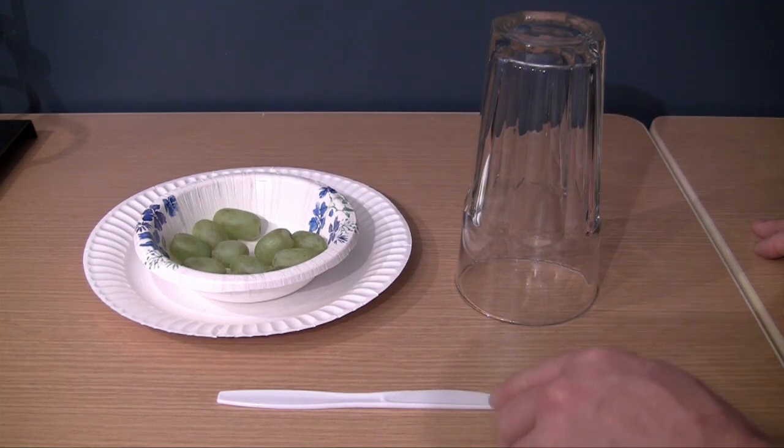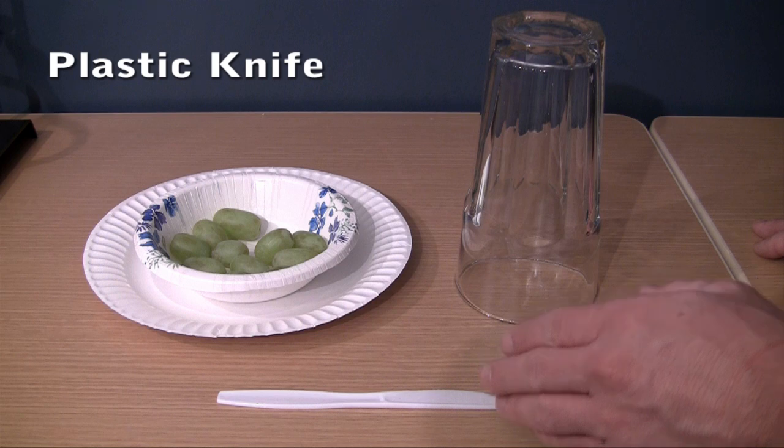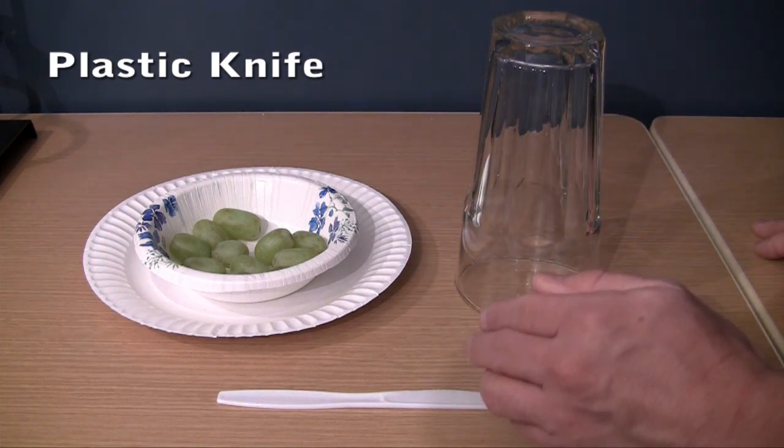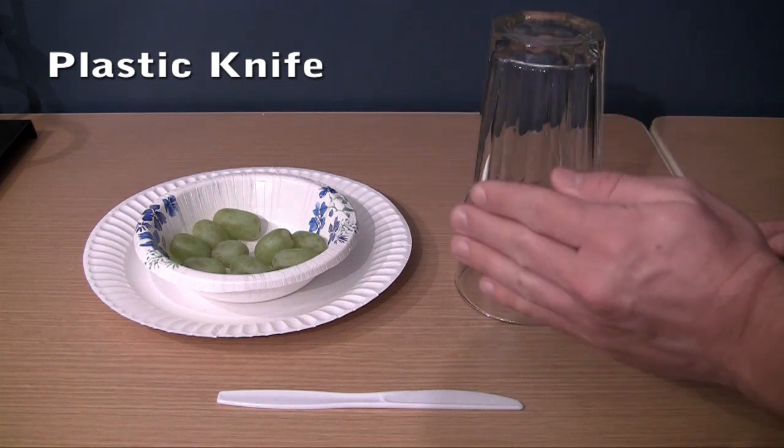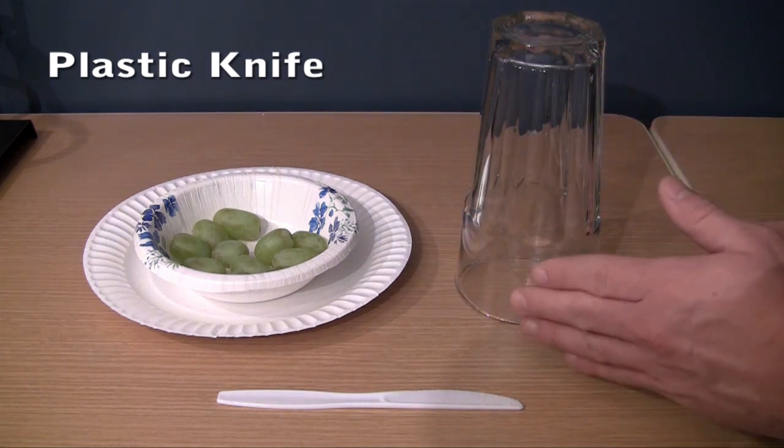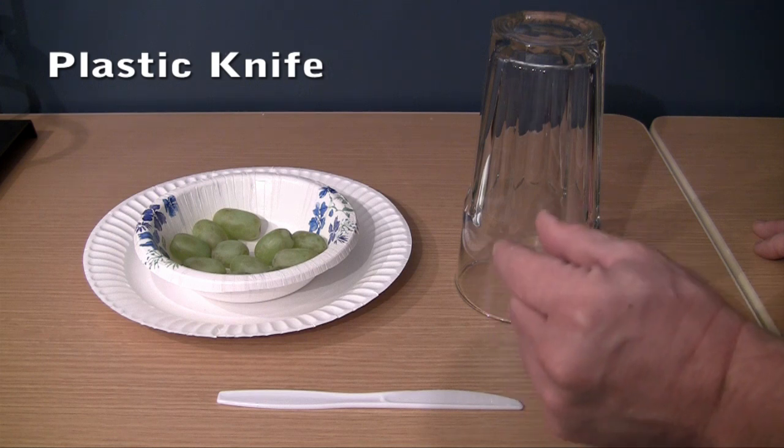And the last thing that you need is a knife. Now we're going to be using the knife to cut the grapes, and I actually recommend a plastic butter knife because whenever we cut these grapes, as you're going to see, we don't want to go all the way through the grape. We want to leave a little bit of skin attached.